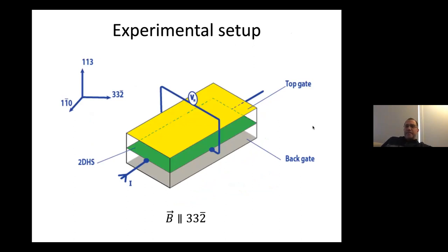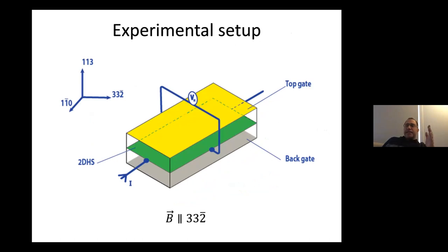The experiment we have in mind: ideally you want a top gate and a back gate. With both, you can change the number density with one and change the strength of Rashba with the other. We did the calculation for both symmetric and asymmetric wells, so a dual gate is not an absolute requirement. You pass a current and measure the Hall voltage. We define [1,1̄,0] as the x-axis, [1,1,3] as the z-axis, and [1,1̄,0] accordingly.